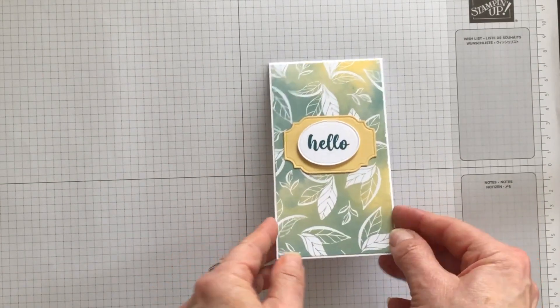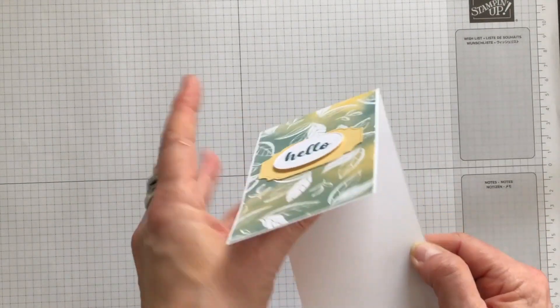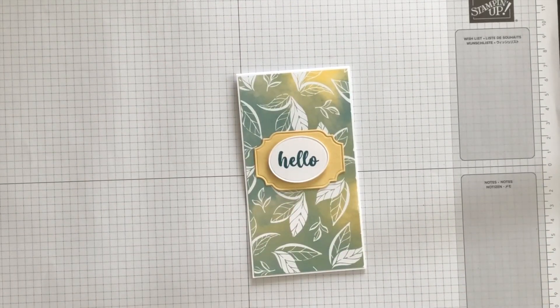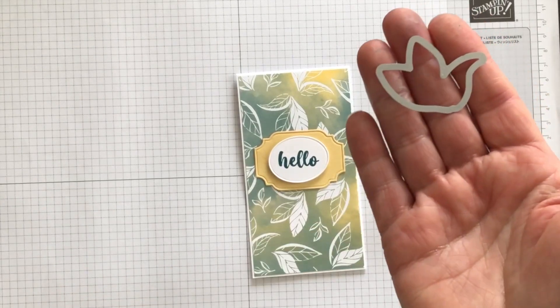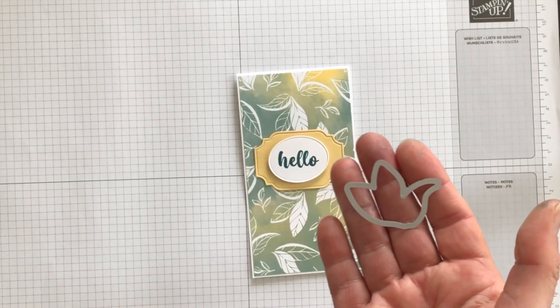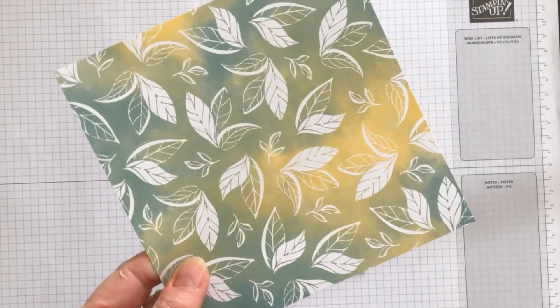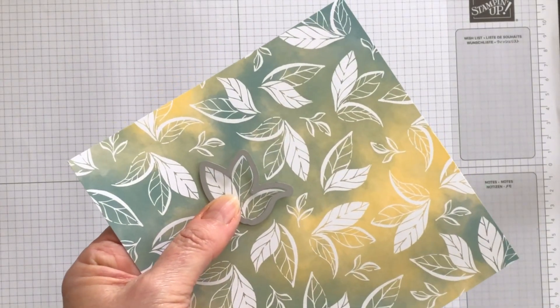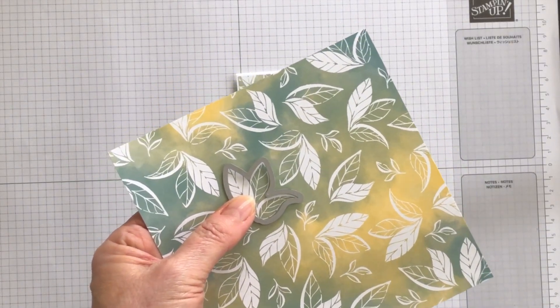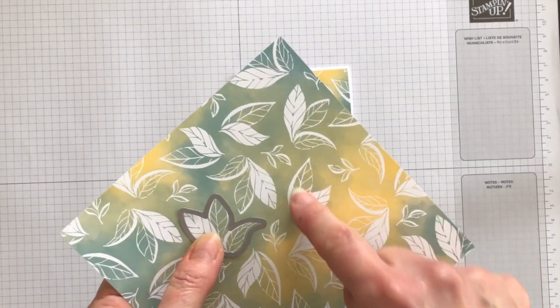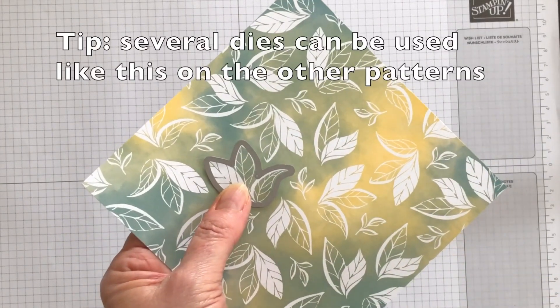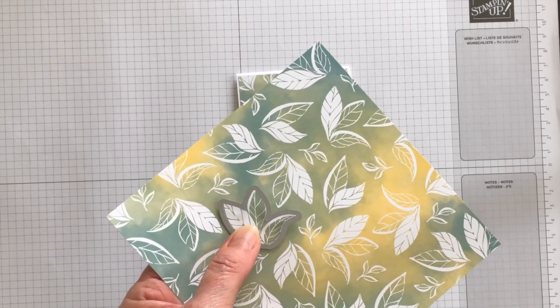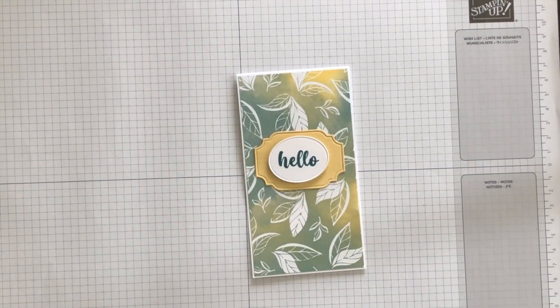Now I want to add one additional element to the inside of this fun fold. And to do that, I am going to take this die from the Irresistible Blooms die pack and this sheet of designer series paper. And look at this. You can die cut out this trio of leaves. There's also a second die in the pack that you can use to die cut out the duo set of leaves. But I want to use the trio, so I'll stop the video, I'll die cut this out and then we'll attach it to the inside of the fun fold.